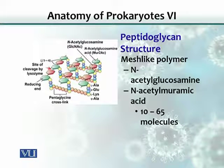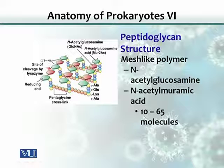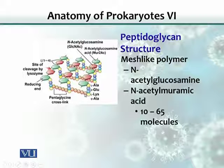If you look at the peptidoglycan structure, it is made up of two sugar molecules: N-acetylglucosamine and N-acetylmuramic acid. These two sugar molecules form the backbone of the cell wall, and can range from 10 to 65 molecules held together. There are also two more components — basically proteins. There is a side chain called a tetrapeptide, consisting of four different amino acids linked together. Then there is another chain of pentapeptides with five, six, or sometimes seven different amino acids — these glycine chains are called crossbridges or interbridges.